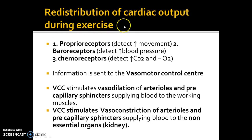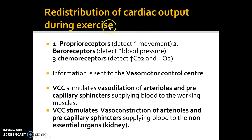Cardiac output, as I said earlier, is the volume of blood ejected from the heart per minute. During exercise there is a massive sea change in the distribution of that blood, because certain places in our body need it more than others.